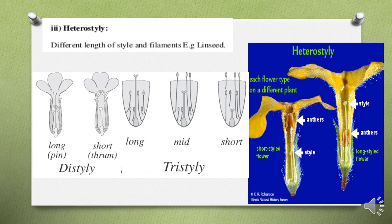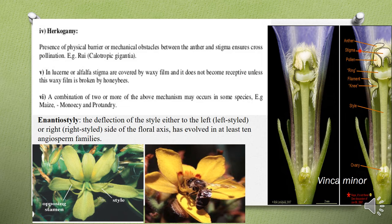In certain crops like lucerne or alfalfa, the stigma is covered by a waxy film and does not become receptive unless this waxy film is broken by honey bees. So the pollens from the anthers of the same flower are unable to fertilize the stigma of that particular flower, thus facilitating cross-pollination.